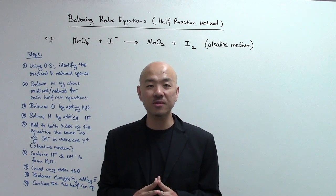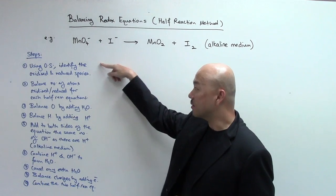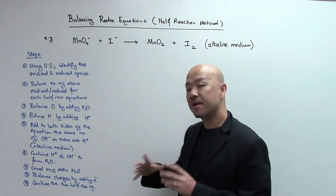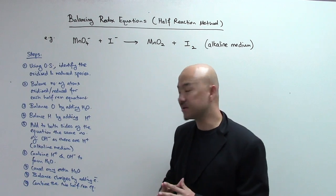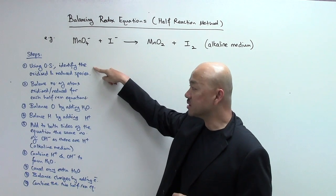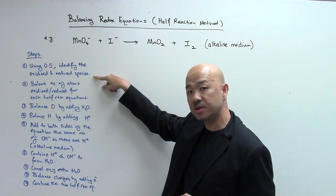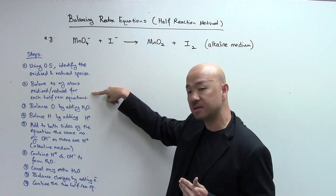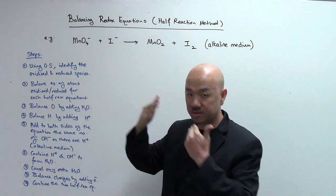Let's take a look at the board on the procedures and steps to carry out balancing them. Now this one is slightly longer — there are about nine steps — but once you get used to it, it becomes very smooth. First of all, using oxidation state or oxidation number, we're going to identify the oxidized and reduced species in the question, after which we balance the number of atoms oxidized or reduced for each half reaction equation — the oxidation half and the reduction half.